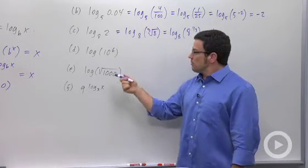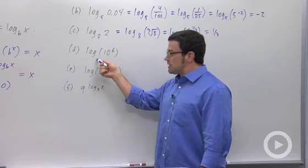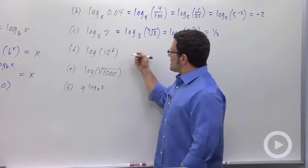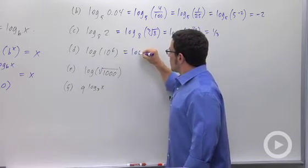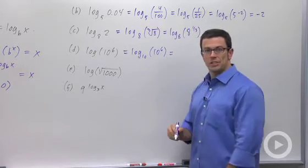Remember the common logarithm? Whenever you see a log without the base written, this is the base 10 log. And so this is the same as the log base 10 of 10 to the sixth. And so that's just 6.